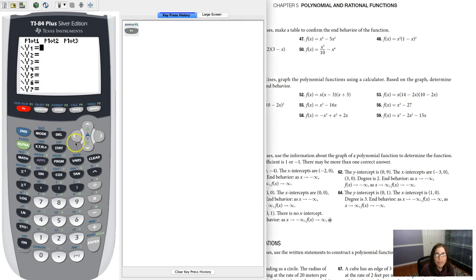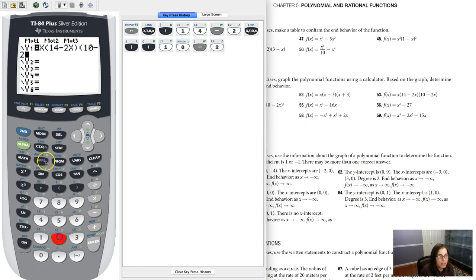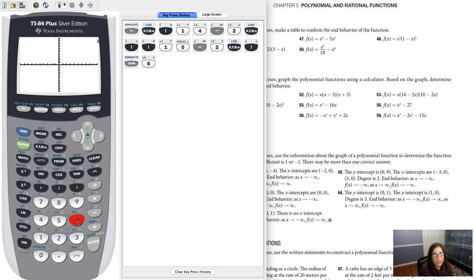All right, let's go graph this. So let's put x in here, and then we'll go 14 minus 2x, and then 10 minus 2x. And I'm going to hit zoom 6. I don't know what my last window was, so let me just reset with zoom 6 and see what we're looking at.